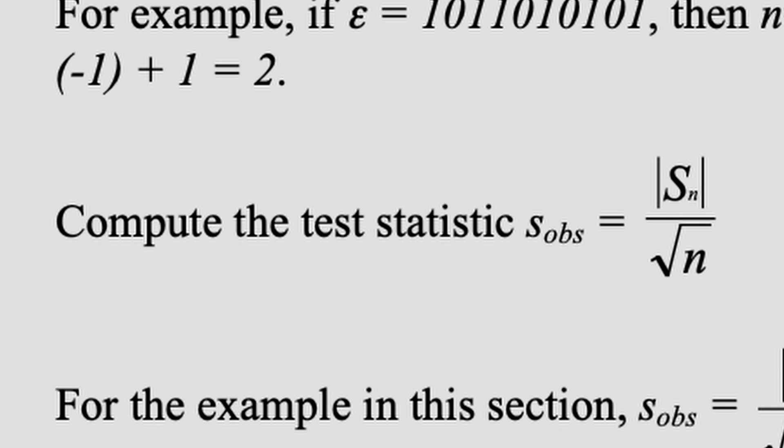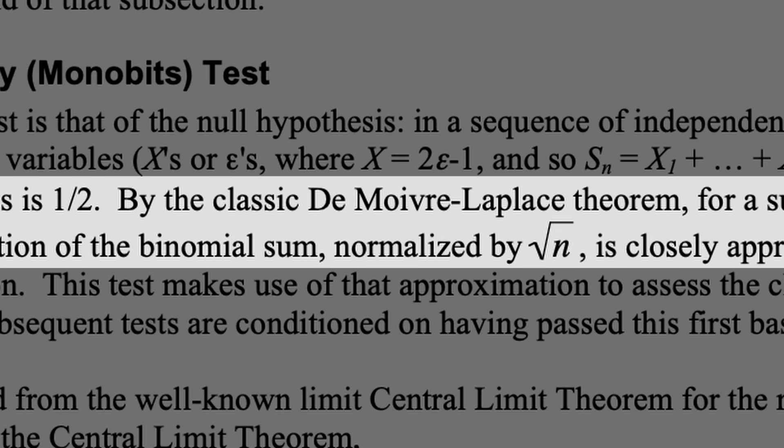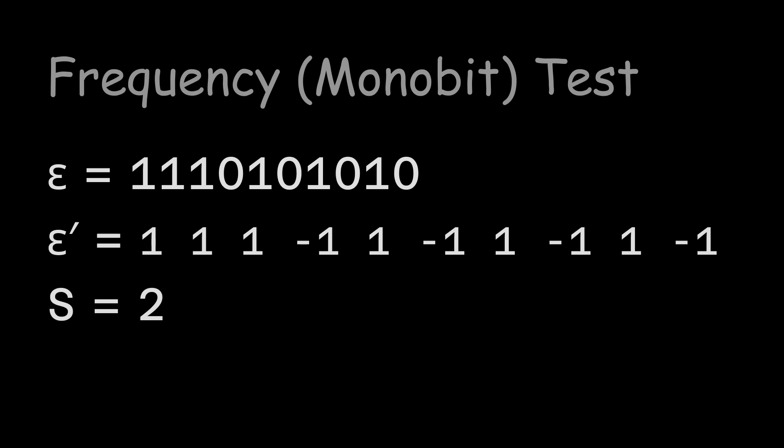But where does the square root of N come from? Think about it for a second. That's right! If we skip ahead 40 pages, they explain that it comes from the Desmois-Laplace theorem. Whatever that is. Anyway, for our example, we would run a standard statistical test with our 0.63 result and conclude that the sequence is probably random.